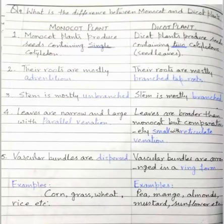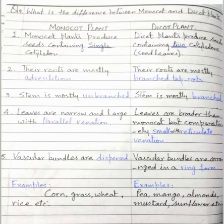Now write question number nine: what is the difference between monocot and dicot plants? Make a column with a margin. Write 'monocot plant' as heading number one and 'dicot plant' as heading number two with a black marker.